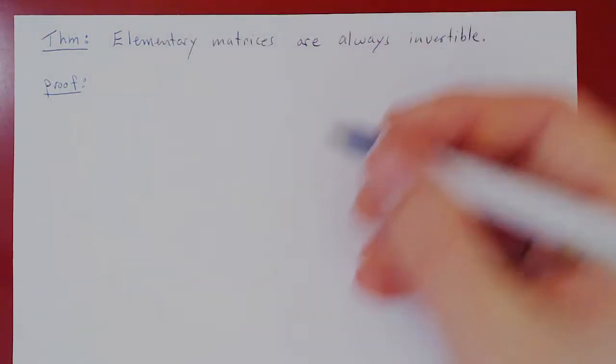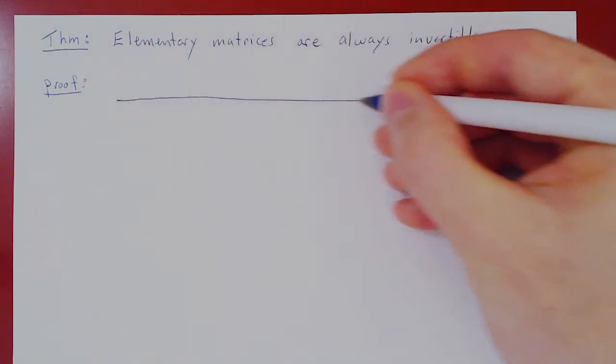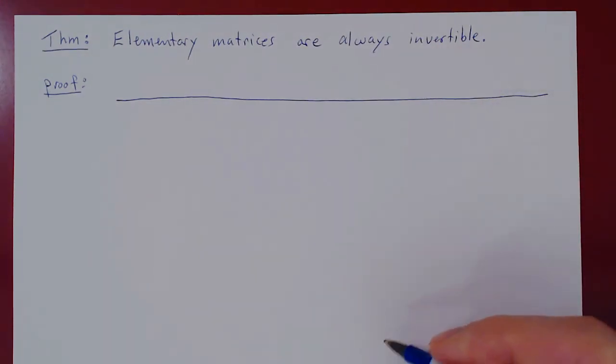So let's consider the three types of row operations and then the corresponding inverses.